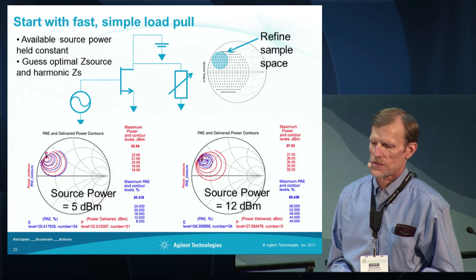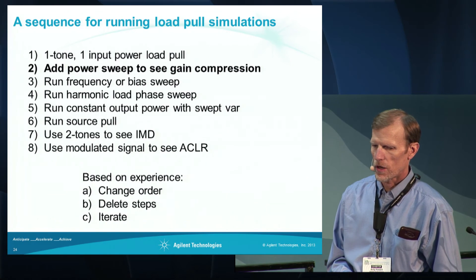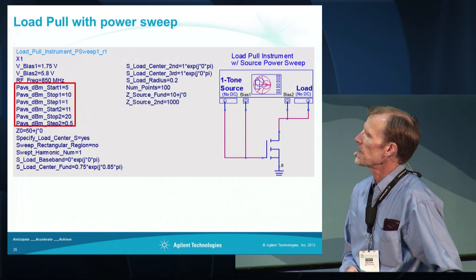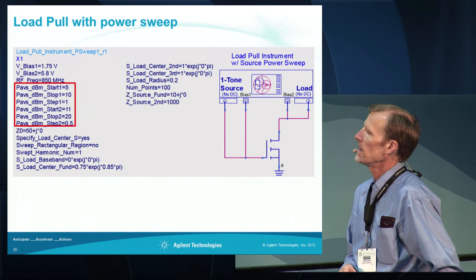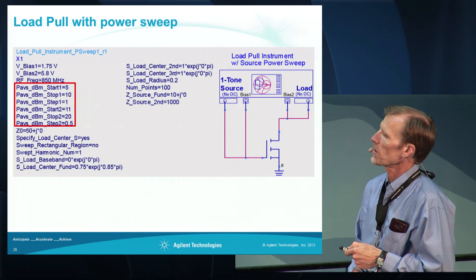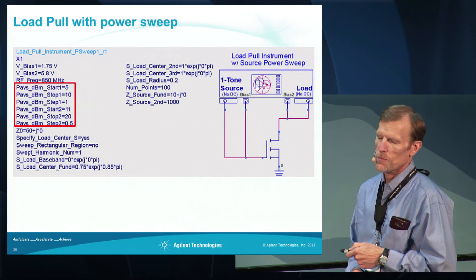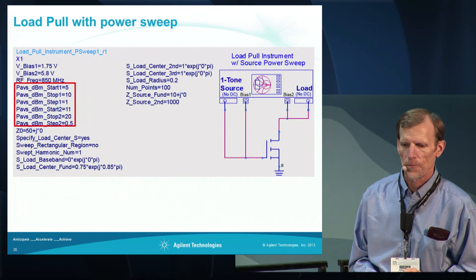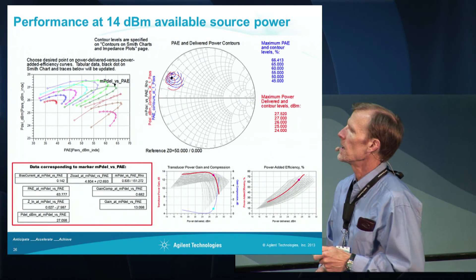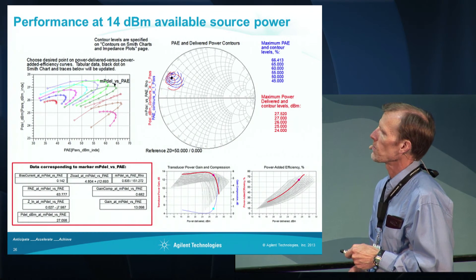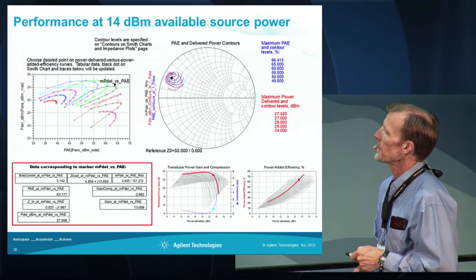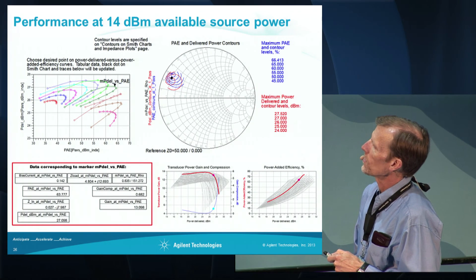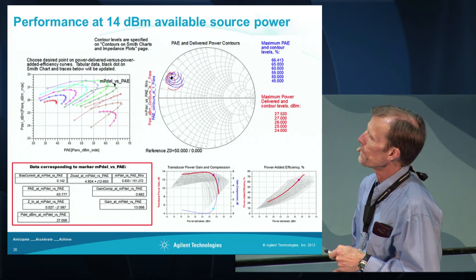We really don't know anything about the amount of gain compression unless we manually step the source power, and this does indicate that gain compression is occurring. If we add a power sweep, then we can see gain compression data. This setup is the same as before, except that instead of a single available source power, we're now sweeping the available source power. We can see gain compression data — we're looking at performance at a single available source power of 14 dBm.